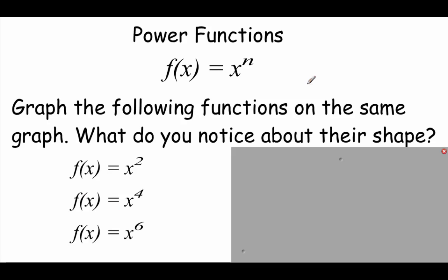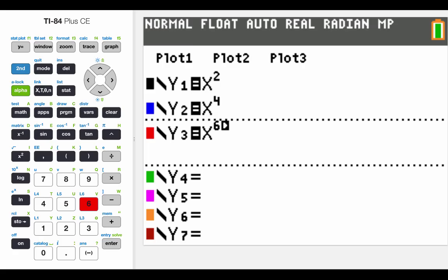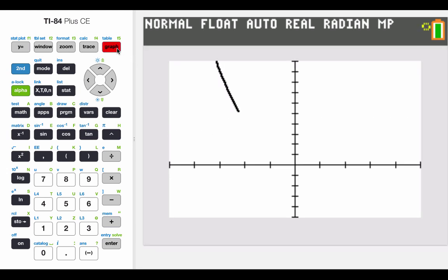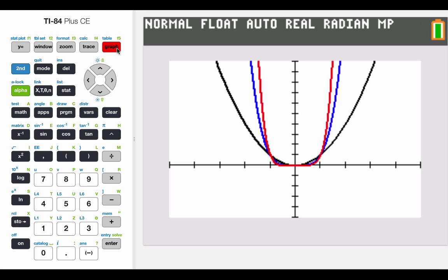Now let's look at power functions where we've got x raised to some power of n, and get a general idea of what these graphs should look like. Grab your calculators — we're going to graph x squared, x to the fourth, and x to the sixth. All three have kind of the same general shape. That first one is a parabola. The other two look sort of like parabolas — maybe a little skinnier and flatter on the bottom, but they have a parabolic look to them.